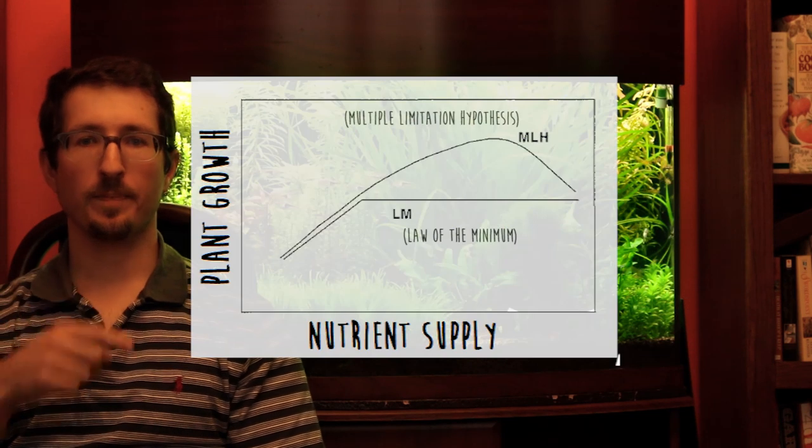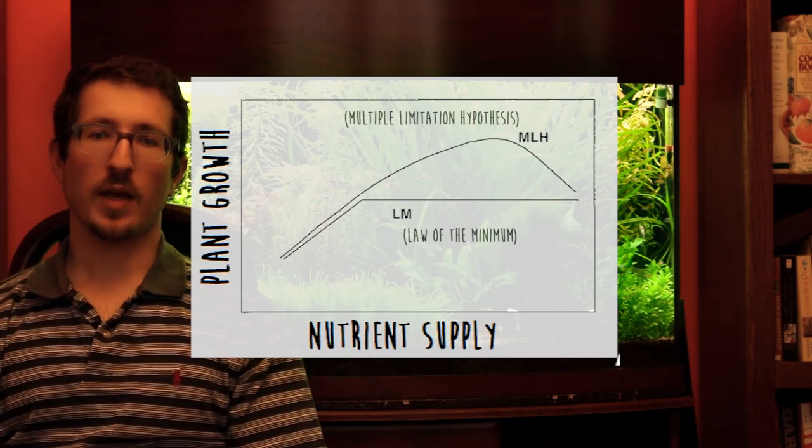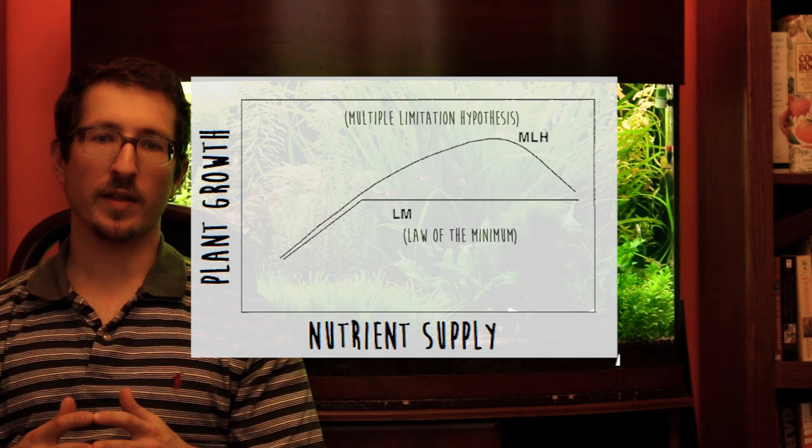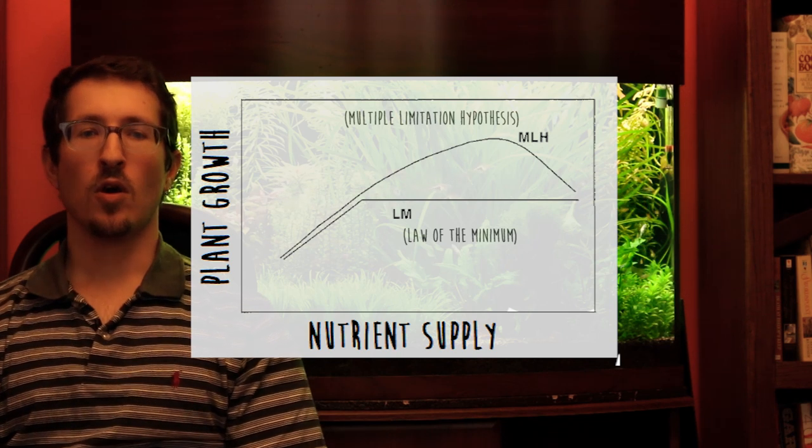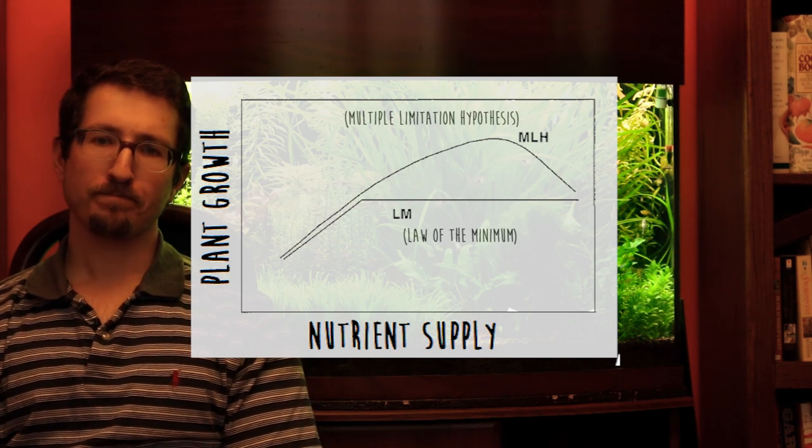Liebig's law and the MLH predict markedly different responses to the addition of a single resource. MLH plants should have a positive response to the addition of any individual resource at all levels. Take a look at this figure — it's clear that Liebig's law and the MLH cannot both be valid at the same time, and in any specific case one should prevail over the other. While MLH fits empirical observations of plant responses to interactions of carbon, water, and nitrogen limitations, when interactions among diverse nutrient resources are considered, the situation is less clear.